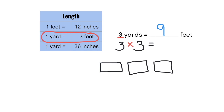If you think of it this way, we have three yards represented by these squares, and if each yard is three feet, we have three, six, nine feet.